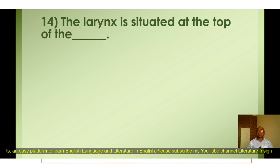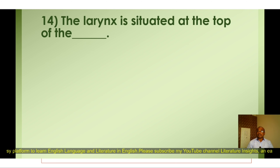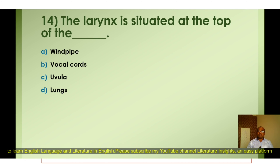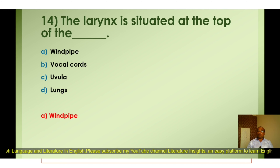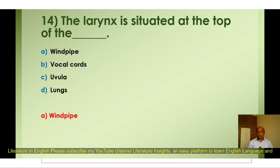Question number fourteen: The larynx is situated at the top of the — A) Windpipe, B) Vocal cords, C) Uvula, D) Lungs. The correct option is A) Windpipe or trachea. The larynx is situated at the upper part of the trachea or windpipe.